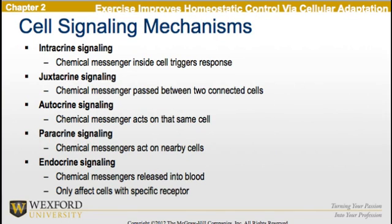Talking about cell signaling mechanisms in more detail: we have intracrine signaling, which is chemical messengers inside the cell triggering a response; juxtacrine signaling, which are chemical messengers passed between two connected cells; autocrine signaling, when chemical messengers act on that same cell; paracrine signaling, where chemical messengers act on nearby cells; and finally endocrine signaling, where chemical messengers are released into the blood only to affect cells with specific receptors.